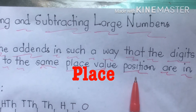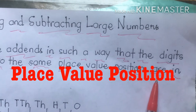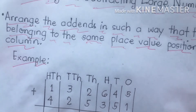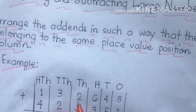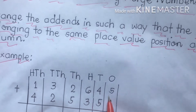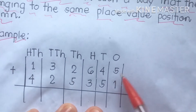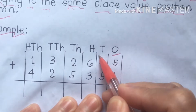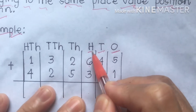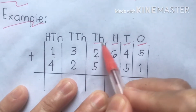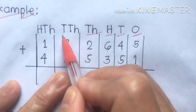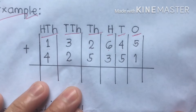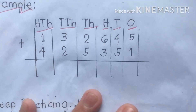We're talking about place value positions. For example, one hundred thirty-two thousand six hundred forty-five: five belongs to ones, four belongs to tens, six belongs to hundreds, two belongs to thousands, three belongs to ten thousands, and one belongs to hundred thousands. Now let's see how we are going to do this.